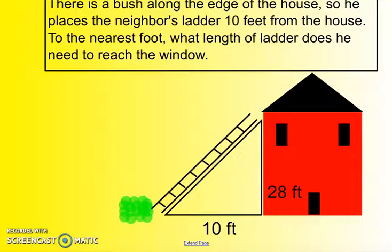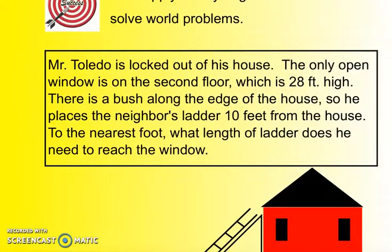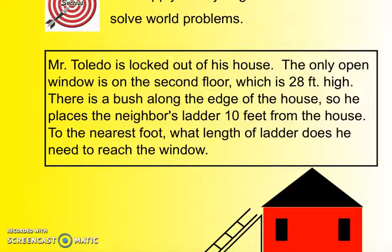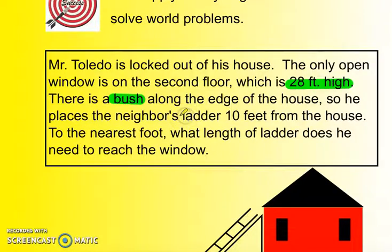Down below, I drew out a picture of this. Because when I solve problems, first of all, I like to draw a picture, but also I like to highlight key information. When I go through this, I definitely want to highlight that the window is 28 feet high. And that there is a bush by the house. I also would highlight that the ladder is 10 feet from the house because I need to add that to my drawing. So we're trying to find what the length of the ladder is.